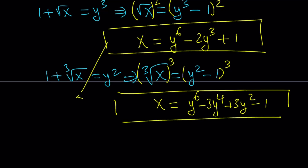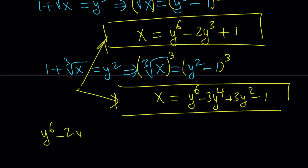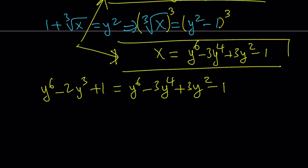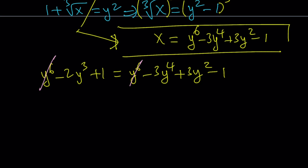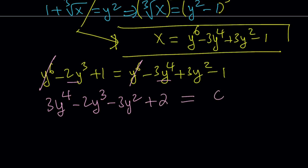We're talking about the same x here because we want to solve this equation for x. So let's set these two expressions equal to each other. y to the 6th minus 2y cubed plus 1 equals y to the 6th minus 3y to the 4th plus 3y squared minus 1. Notice that y to the 6th power cancels out. Putting everything on the left-hand side gives us 3y to the 4th minus 2y cubed minus 3y squared plus 2 equals 0.